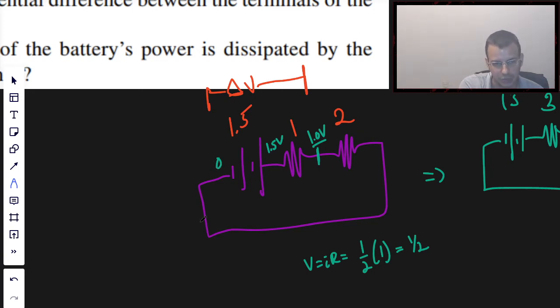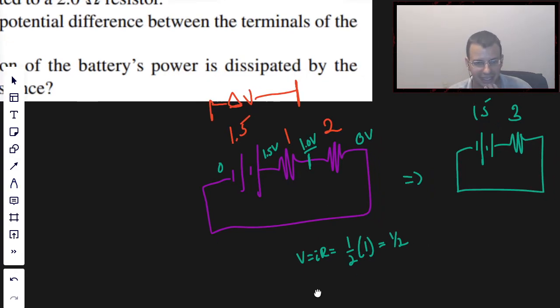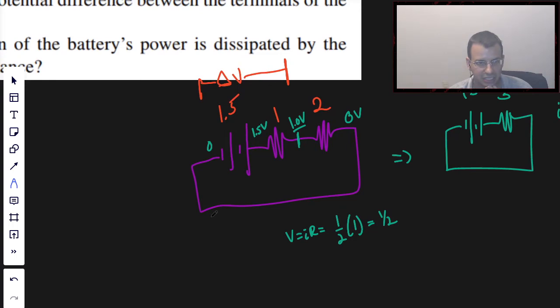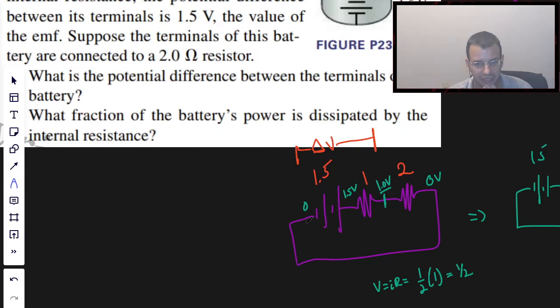And then we know on the other side, we can take this wire, follow it back the other direction, and we get 0 volts here. So what is the potential difference between the terminals of the battery? Delta V battery is 1 minus 0, which is 1 volt. So the voltage across the terminals drops from 1.5 volts to 1 volt when we hook it up to a 2 ohm resistor.